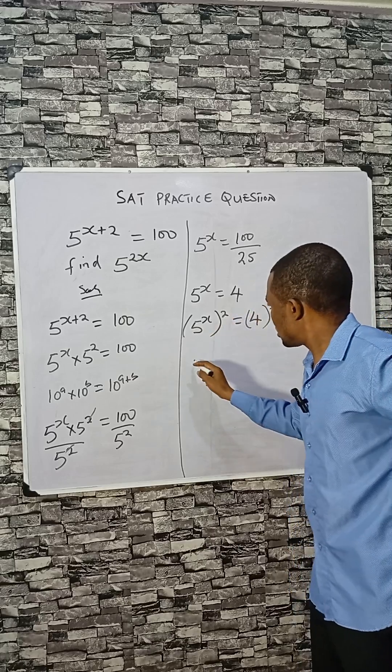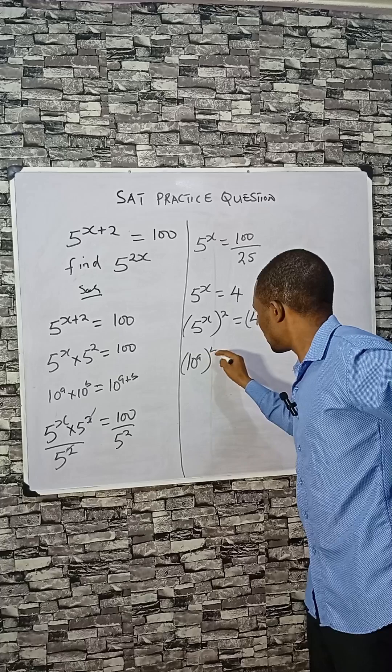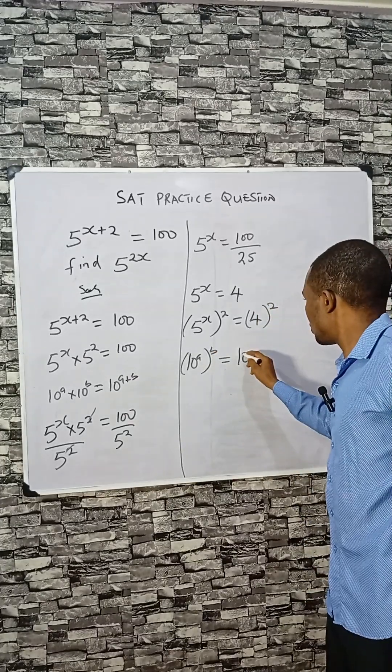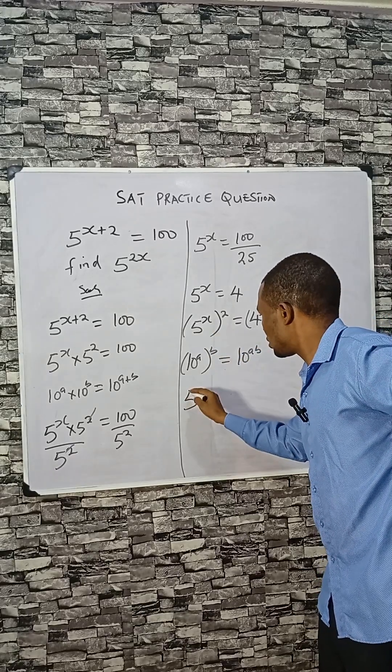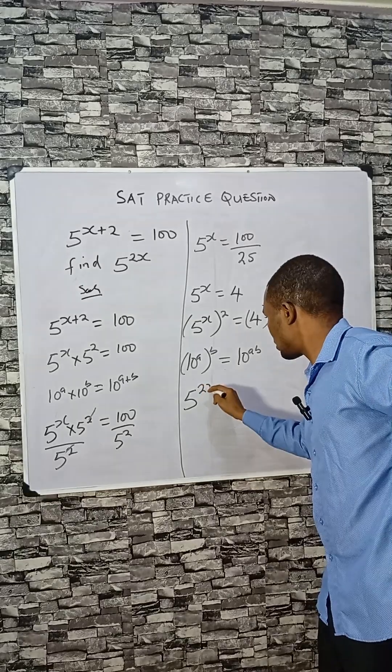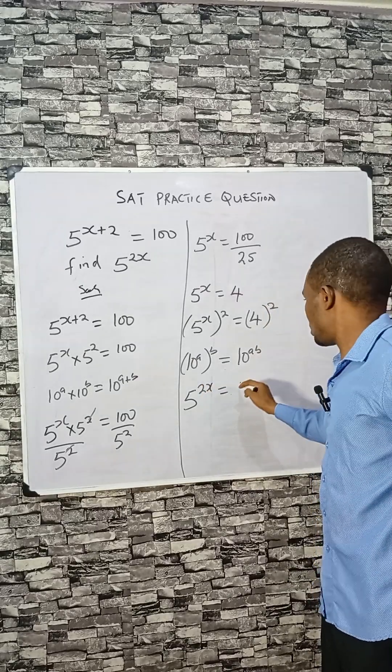You can express indices beneath us. The powers here can multiply themselves. That means you can have 10 raised to the power a times b. So the same thing here, you can have this as 2 times x, which is 2x, equals to 4 squared, which is 16.